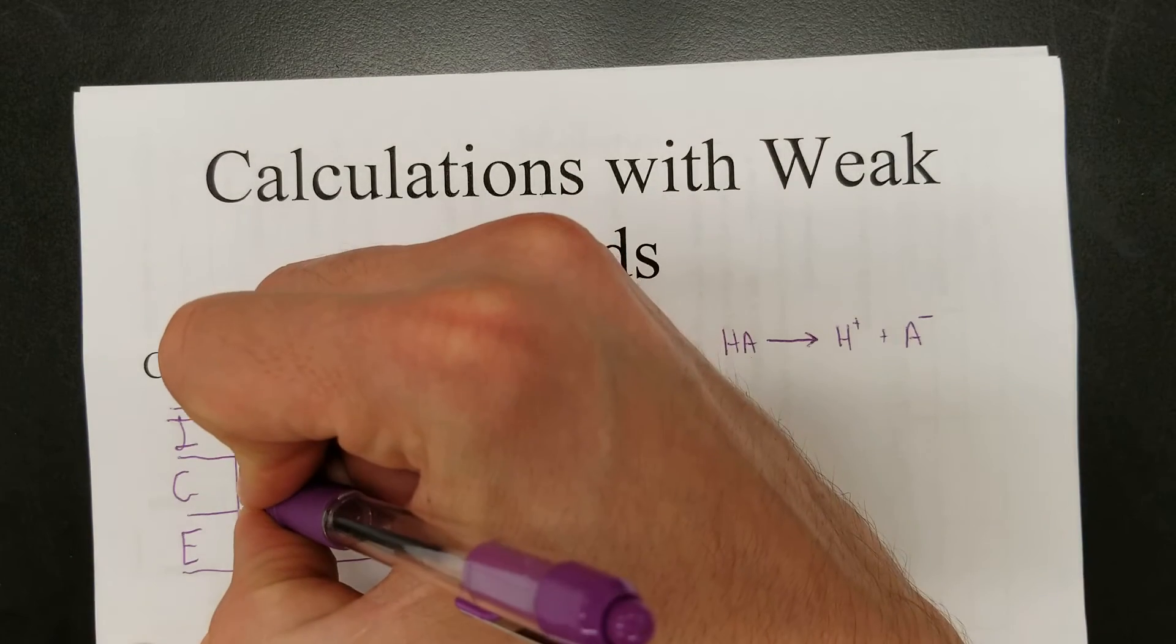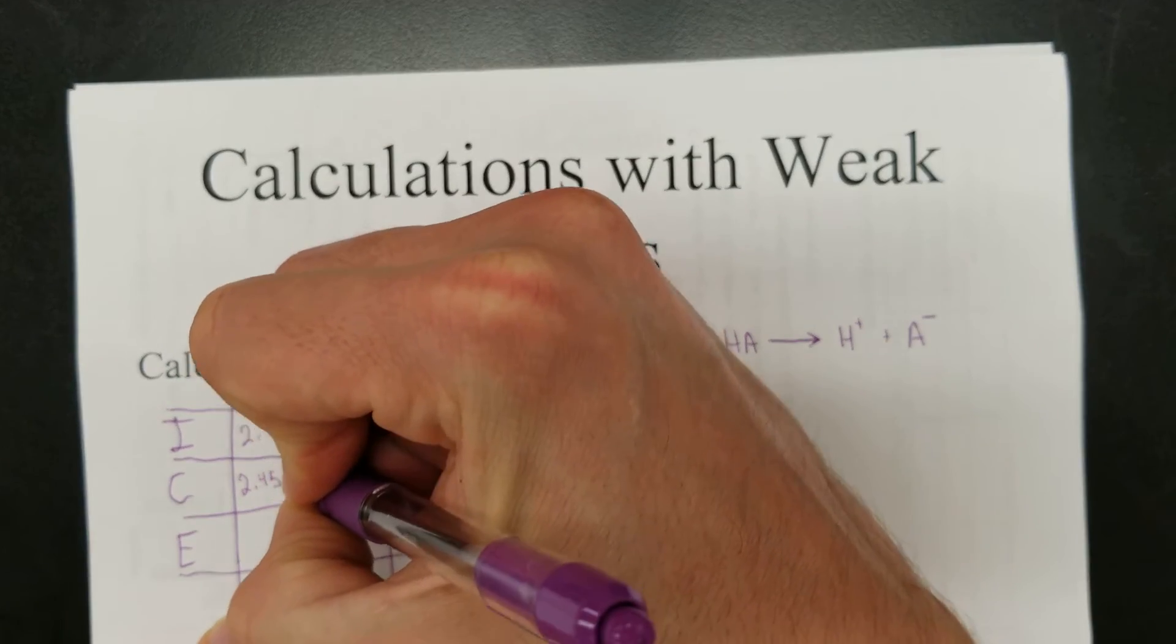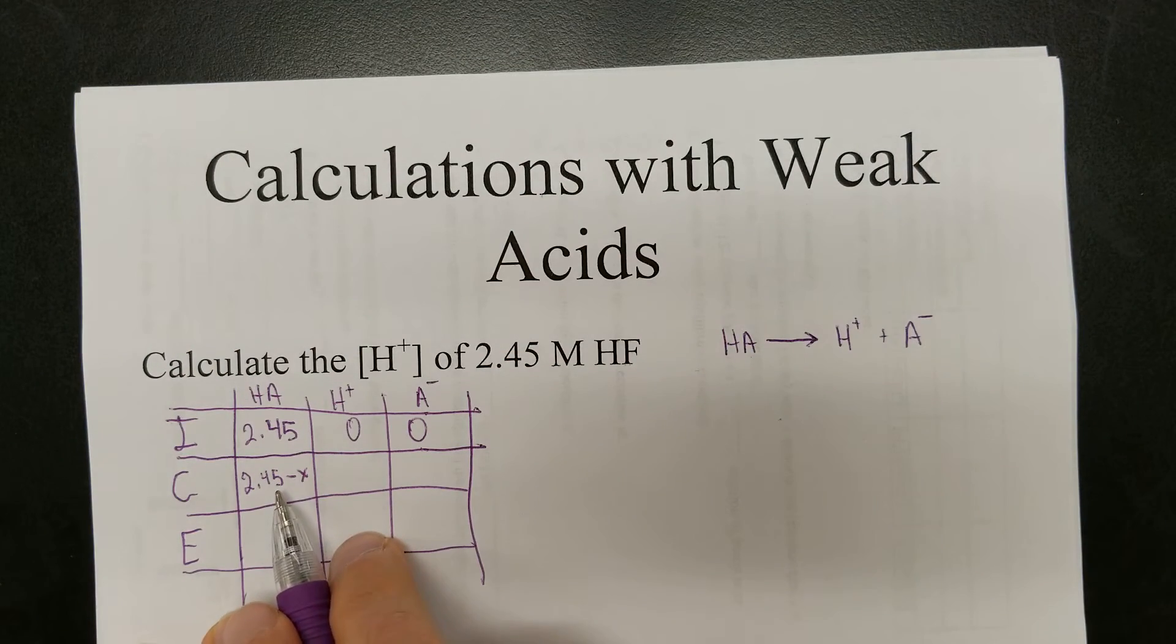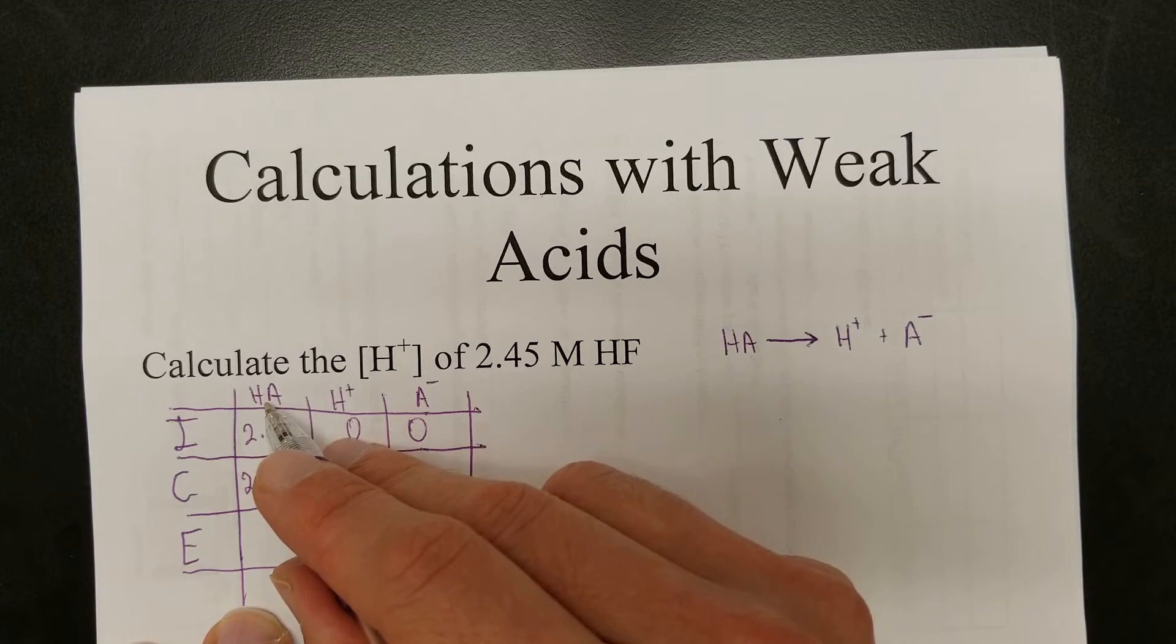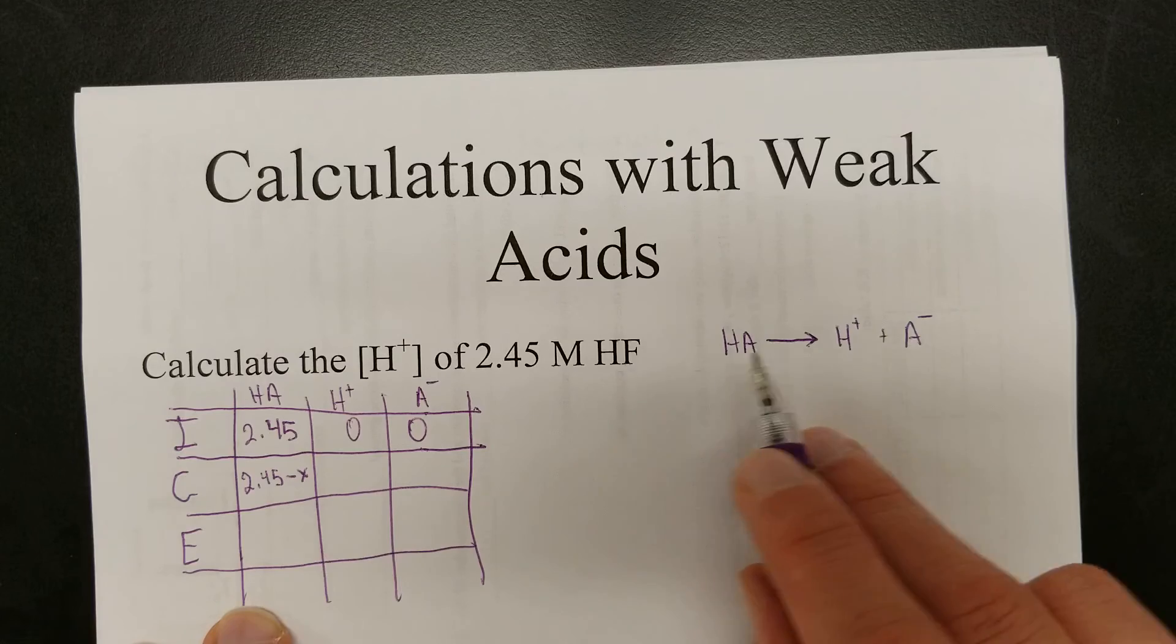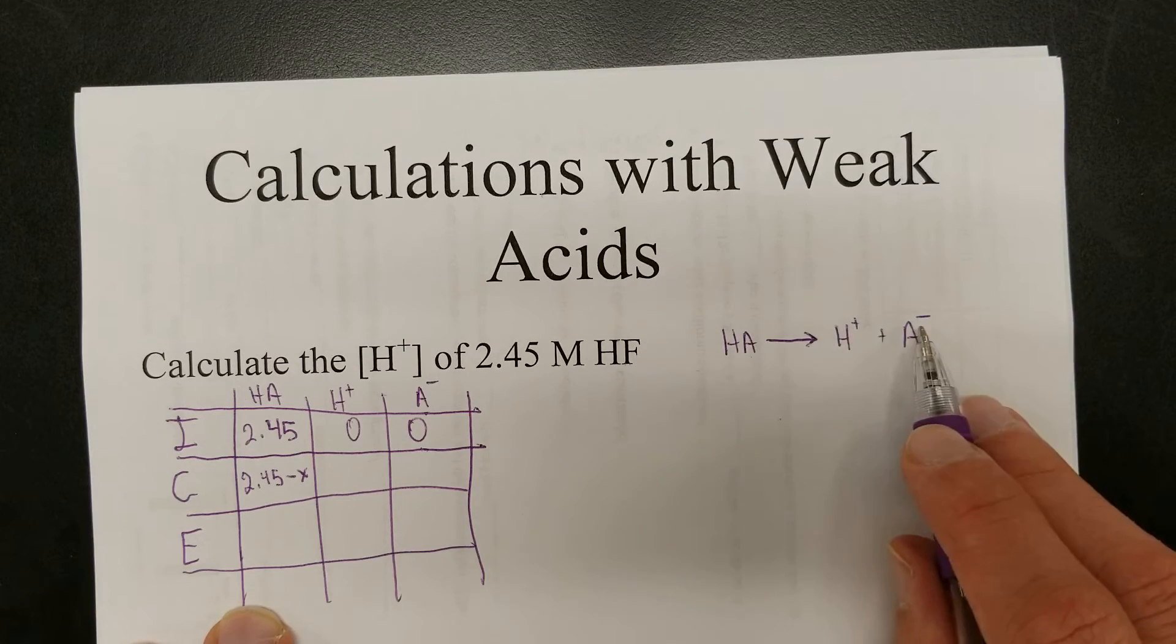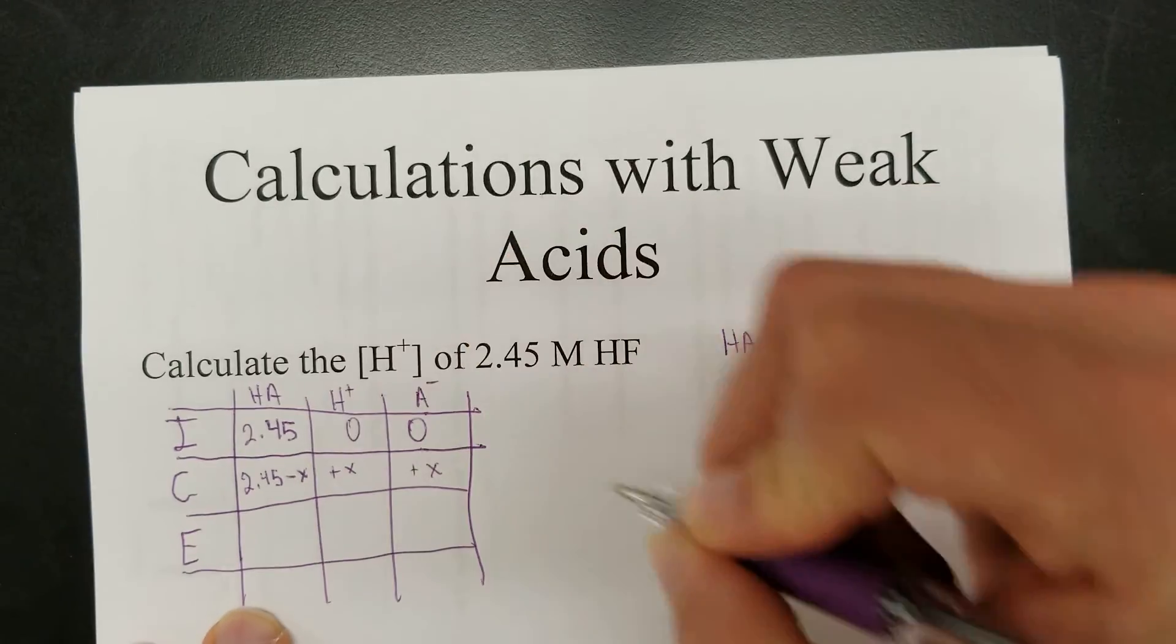When it dissociates, some amount, not directly told to you by the question, will dissociate. We're going to call that X. So for every molecule that dissociates, we're going to say that's X. This represents the amount that dissociates. Every molecule that dissociates is one of these that no longer is. So for every one of these that dissociates, you get one hydrogen and one anion. So for every one of these that dissociates, you get one of these and one of these.